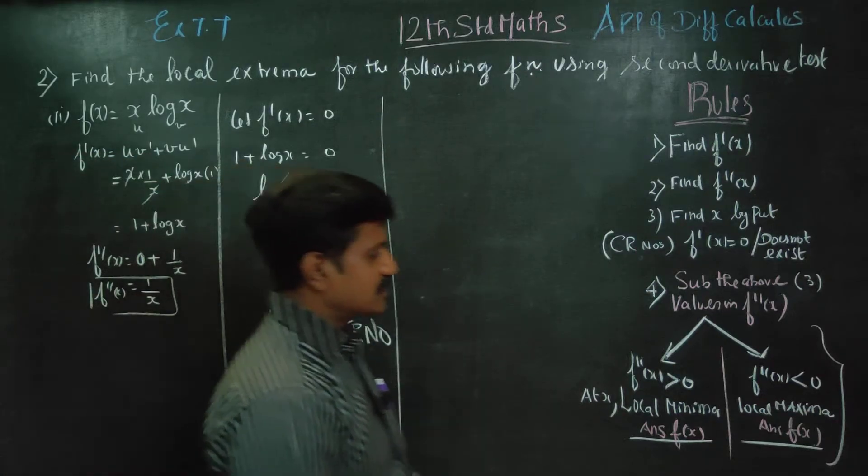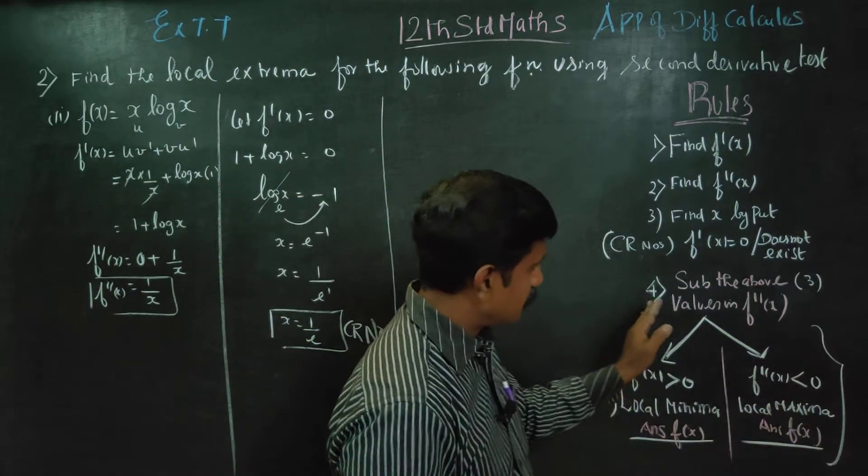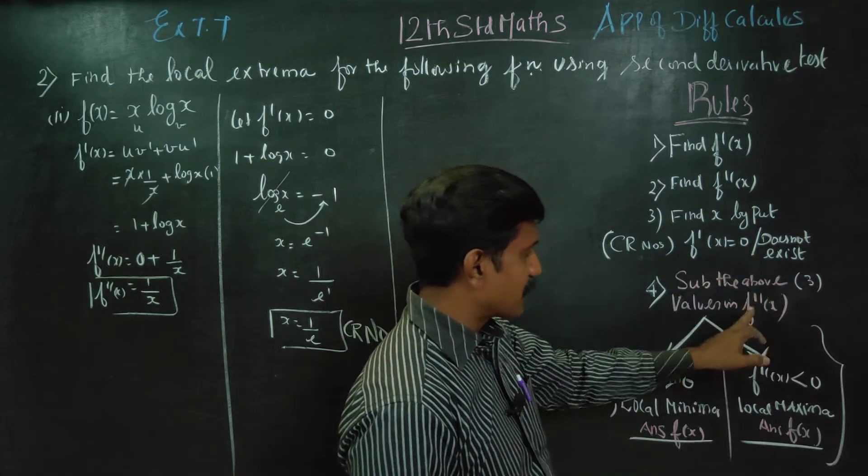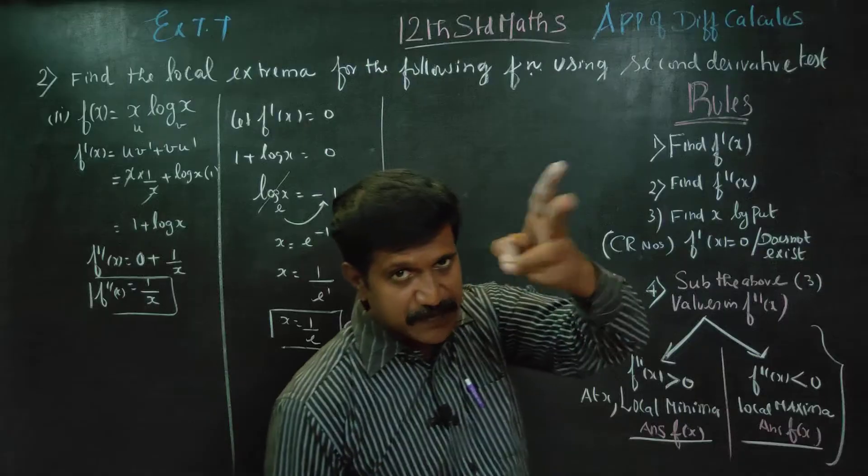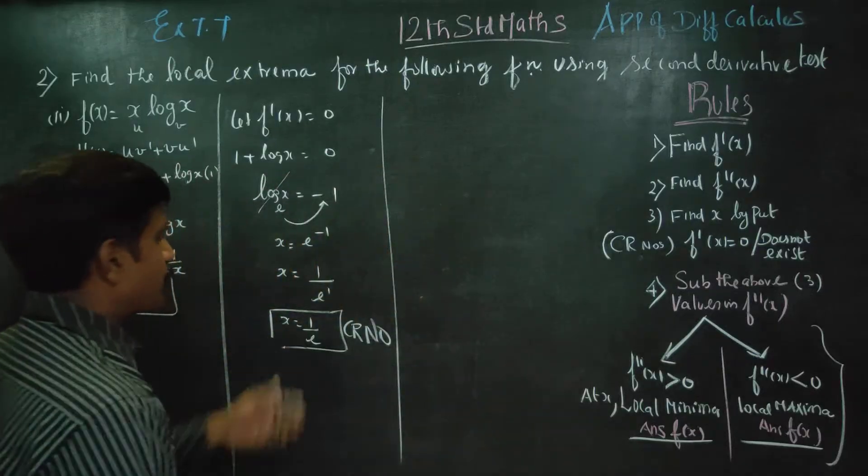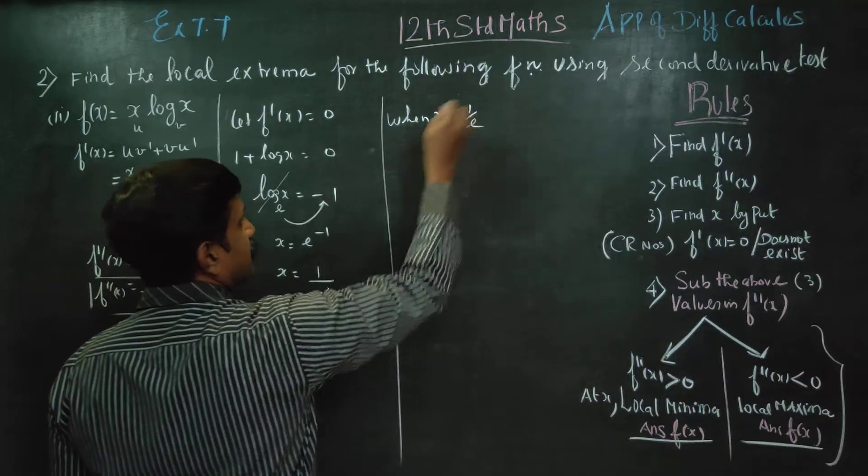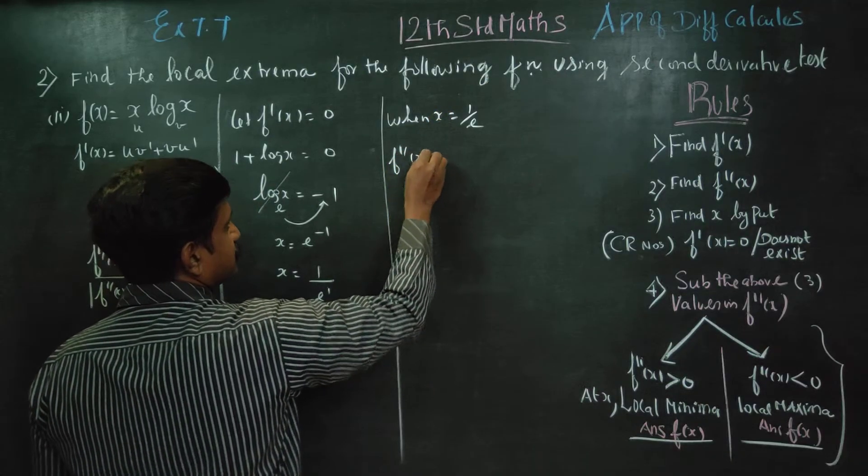This is my testing zone. Substitute the above values. The third step is to evaluate f''(x) at the critical point. When x = 1/e, check f''(x).